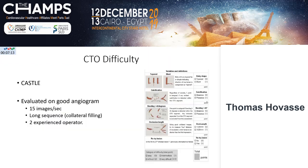CTO difficulty is one of the key points in deciding whether to perform a CTO. You can use the GCTO score, which must be evaluated on a good angiogram — 15 images per second, long sequences, visualizing collateral filling, and avoiding panning during the angio. Additional criteria can also be used, such as classification systems and history of previous CABG.